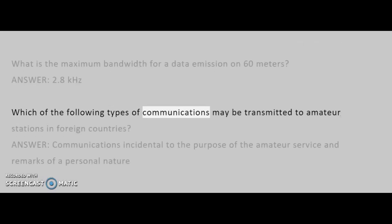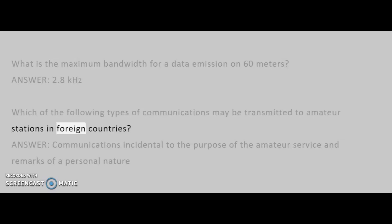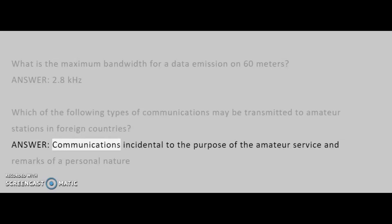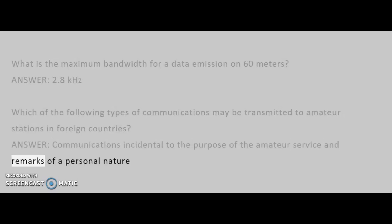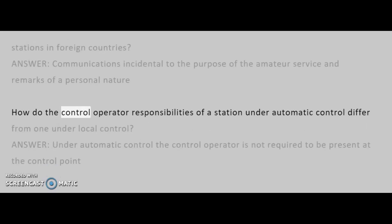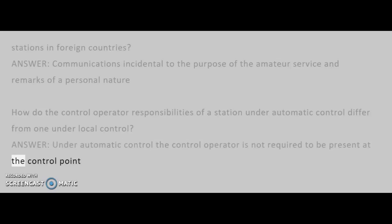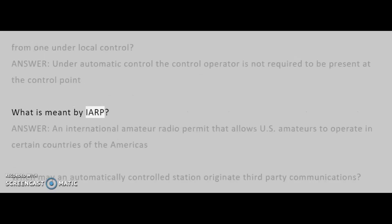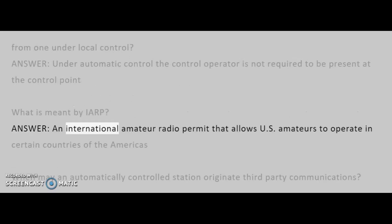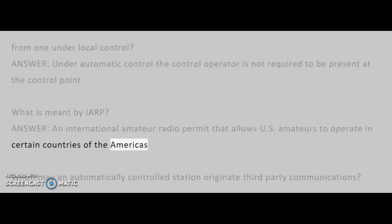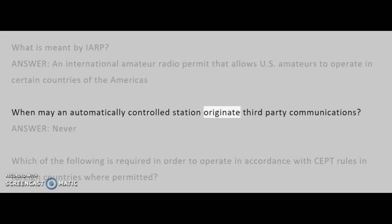Which of the following types of communications may be transmitted to amateur stations in foreign countries? Answer: Communications incidental to the purpose of the amateur service and remarks of a personal nature. How do the control operator responsibilities of a station under automatic control differ from one under local control? Answer: Under automatic control, the control operator is not required to be present at the control point. What is meant by IARP? Answer: An International Amateur Radio Permit that allows US amateurs to operate in certain countries of the Americas. When may an automatically controlled station originate third-party communications? Answer: Never.